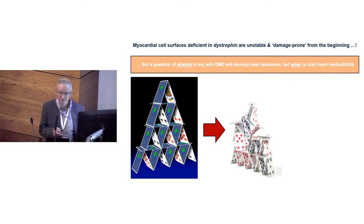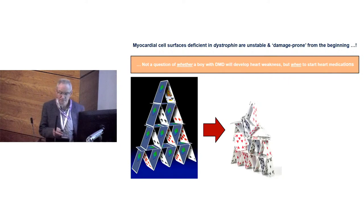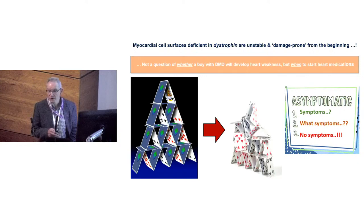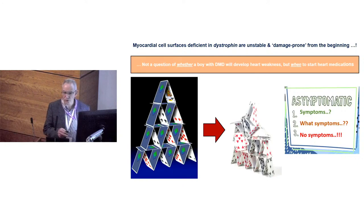In Duchenne, it's not a question of whether the heart will become affected — the heart is always affected. It's just a question of when is the optimum time to introduce treatments. This has nothing at all to do with symptoms; none of these patients have symptoms until they're near terminal from a cardiac point of view. So it has to rely on prospective screening and surveillance.